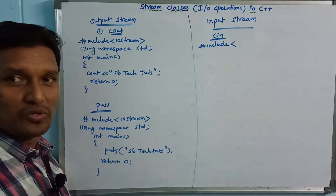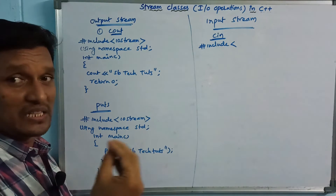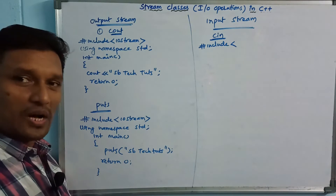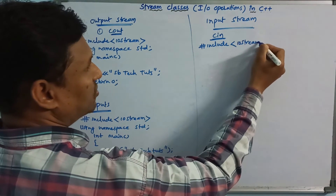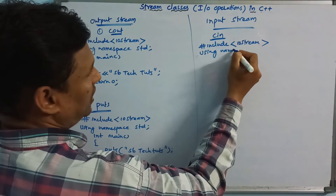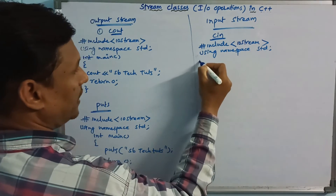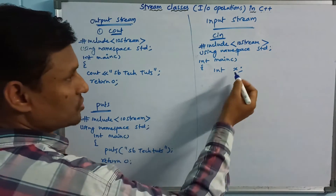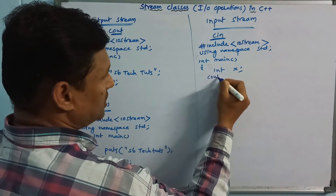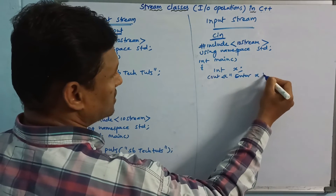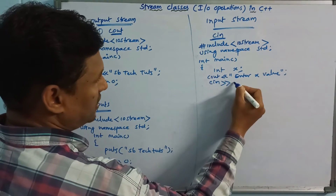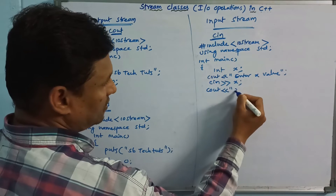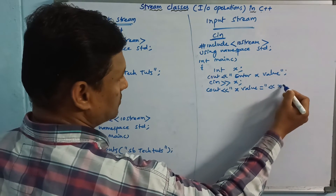If you want to use istream, you can use it with cin. Using namespace std, int main — for example, declare int x. One message is cout: "Enter x value". Then cin >> x (extraction operator). Display: cout << "x value = " << x; return 0.